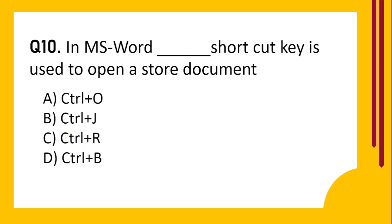Question number 10. In MS Word, dash shortcut key is used to open a stored document. Option A: Ctrl plus O. Option B: Ctrl plus J. Option C: Ctrl plus R. Option D: Ctrl plus B. The correct answer is Option A: Ctrl plus O.